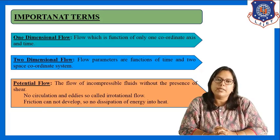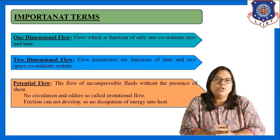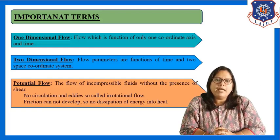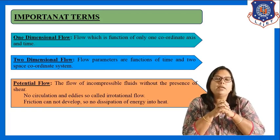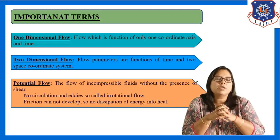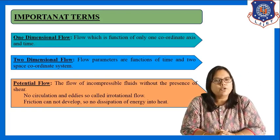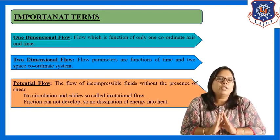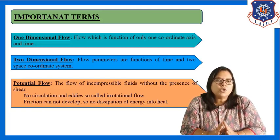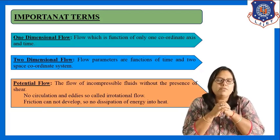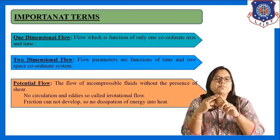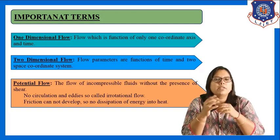Since friction cannot develop in potential flow, there is no dissipation of energy into heat. The definition of potential flow is: flow of incompressible fluid without presence of shear. Its main two characteristics are: it is irrotational flow, and friction is not developed, so there is no dissipation of energy into heat. These are the three important terms — one-dimensional flow, two-dimensional flow, and potential flow with its characteristics.